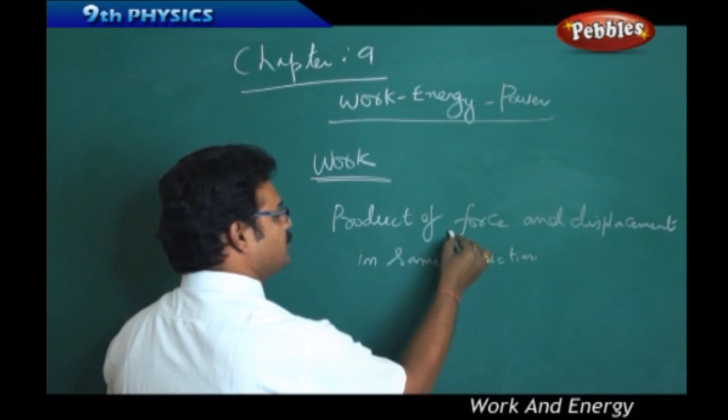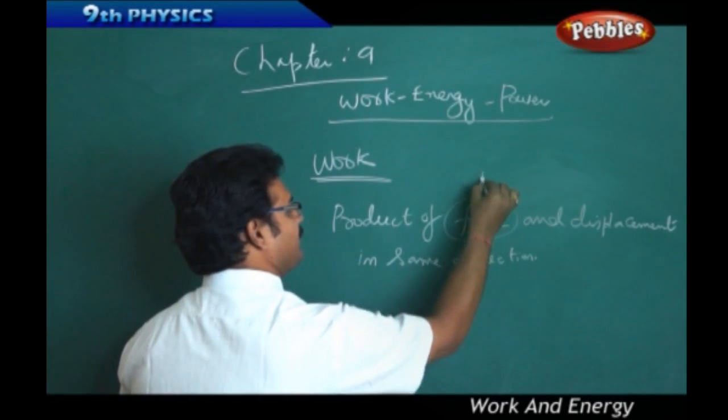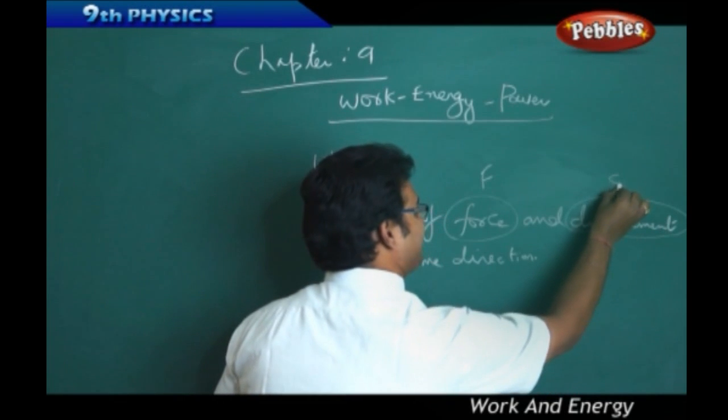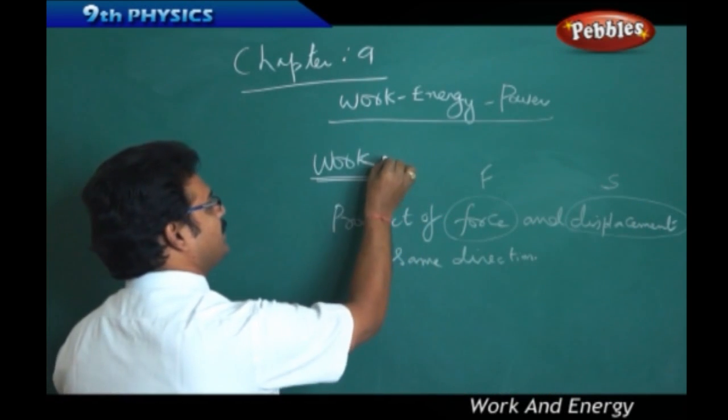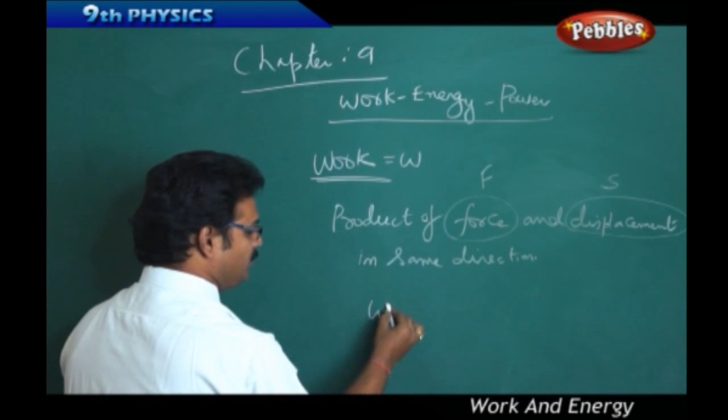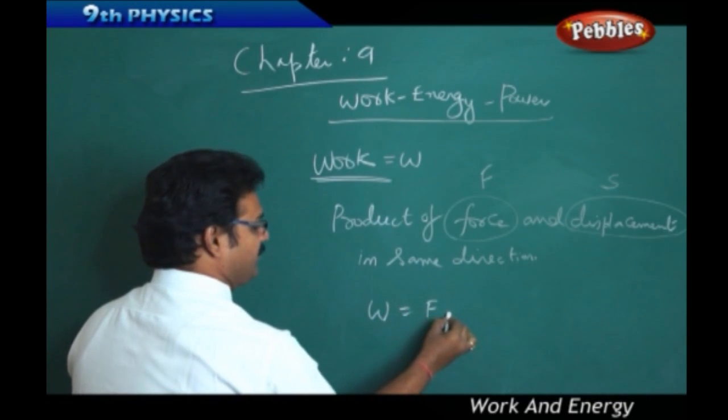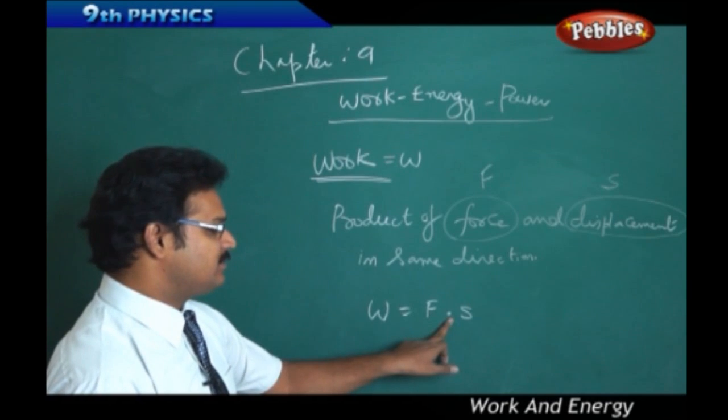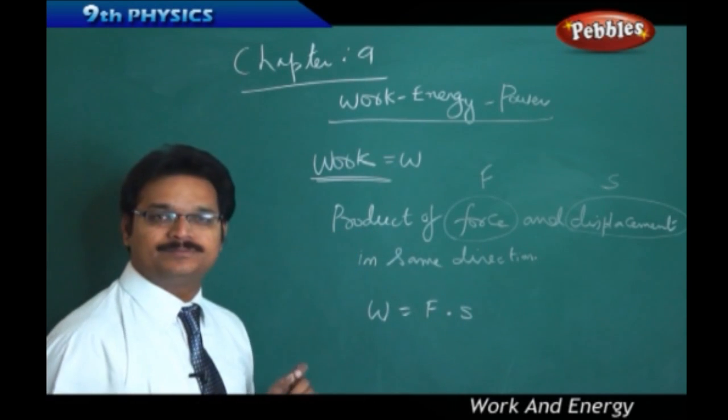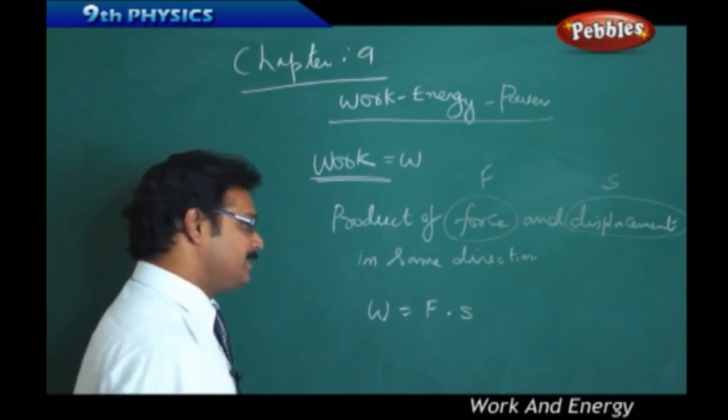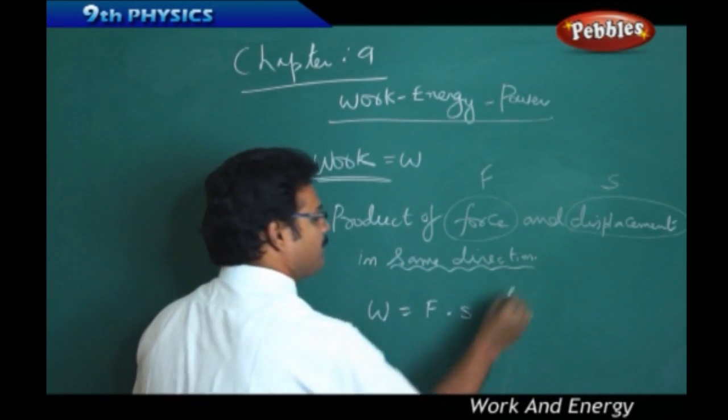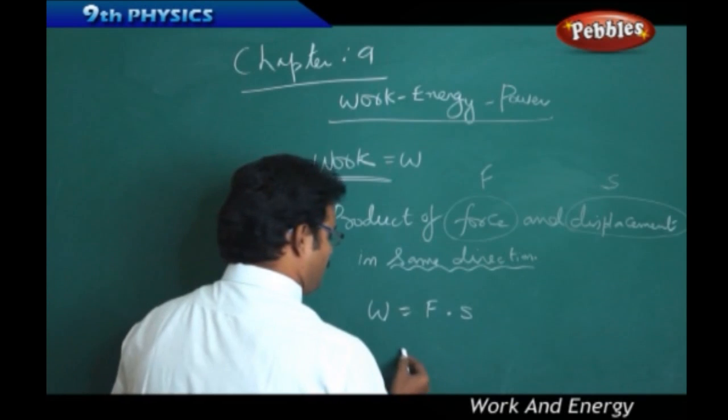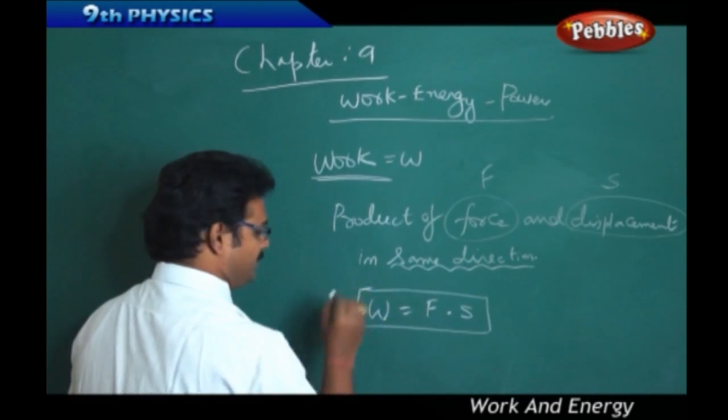Work is defined as product of force and displacement in same direction. Force is represented by the symbol F, displacement is represented by the symbol S, work is represented by the symbol W. Therefore, W equals to F into S. And see this condition is very important: same direction.